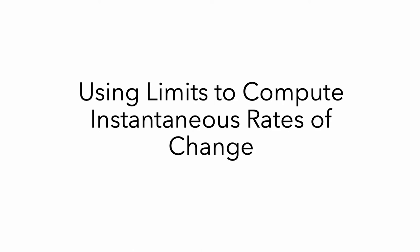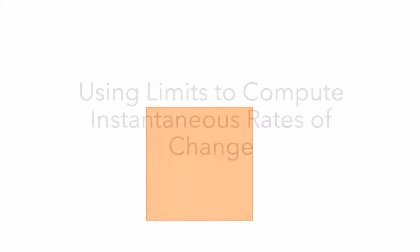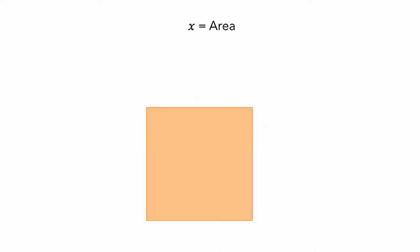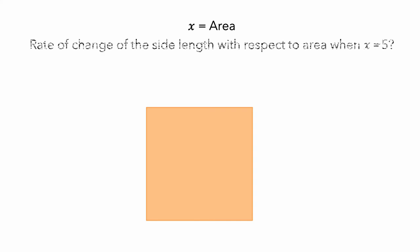In this video, I'll describe how to apply limits to compute instantaneous rates of change. Here is a square. If x is the area of the square, what is the rate of change of the side length with respect to the square's area when the area is 5 square centimeters?